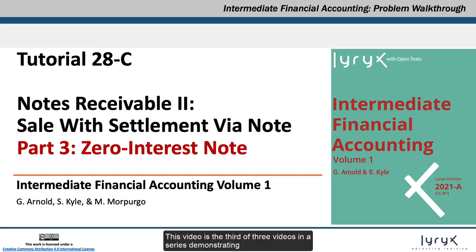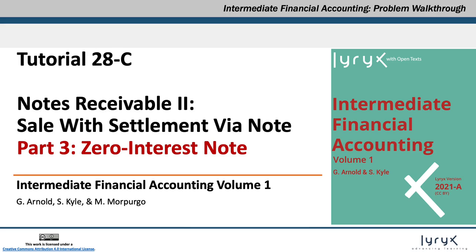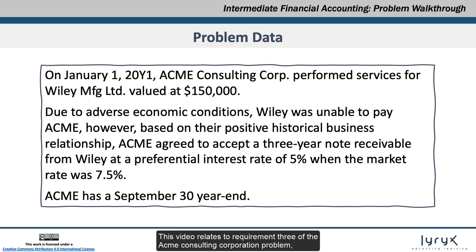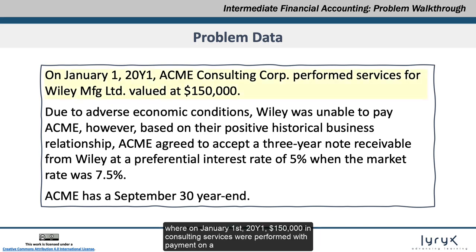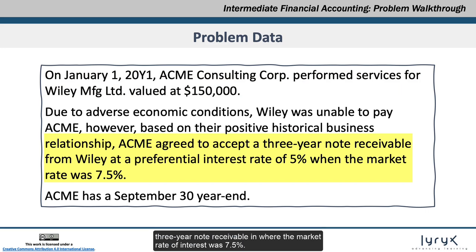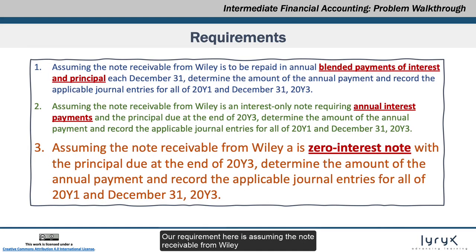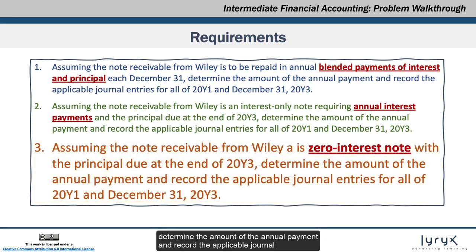This video is the third of three videos in a series demonstrating how to account for a note receivable in exchange for services. This video relates to requirement 3 of the Acme Consulting Corporation problem, where on January 1, 20Y1, $150,000 in consulting services were performed with payment on a three-year note receivable, and where the market rate of interest was 7.5%. The requirement is, assuming the note receivable from Wiley is a zero-interest note with the principal due at the end of 20Y3, determine the amount of the annual payment and record the applicable journal entries for all of 20Y1 and December 31, 20Y3.